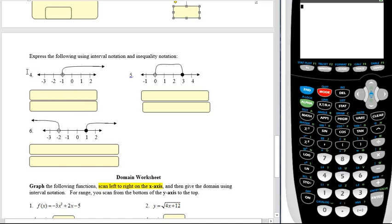In this one as I come in from the left, shading starts at negative 1 and it goes to positive infinity. So I'd have negative 1 comma infinity and I'd have a parentheses around those.